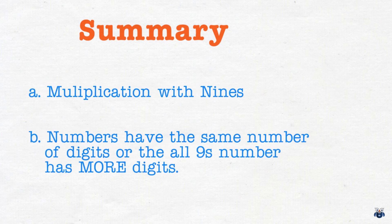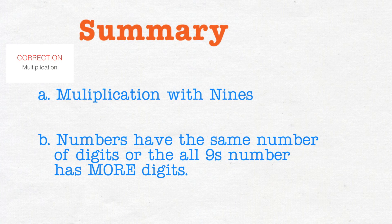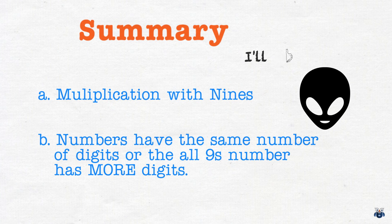So to summarize. In this video we saw a special case of multiplication. Multiplication with 9's. This method works when both numbers have the same number of digits or the all 9's number has more digits. I hope you found this technique useful. In the next video we will look at another specialized multiplication concept. So do stay tuned. Thank you.